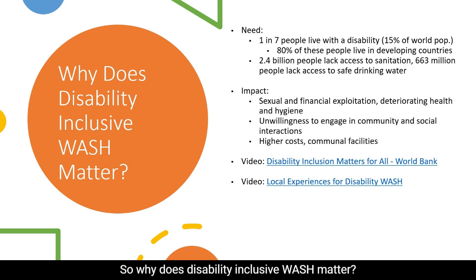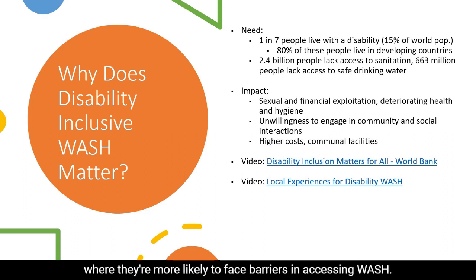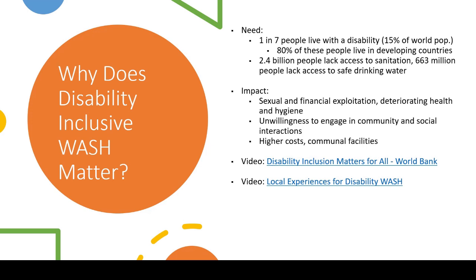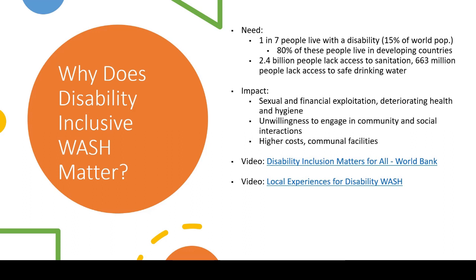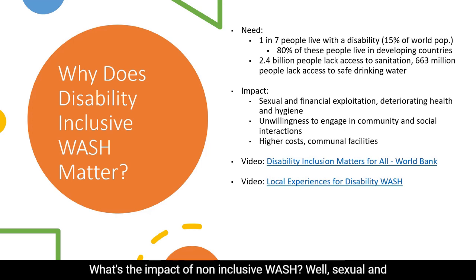So why does disability-inclusive WASH matter? One in seven people live with a disability — that's 15% of the world population, or about a billion people. And 80% of these individuals with disabilities live in developing countries where they're more likely to face barriers in accessing WASH. 2.4 billion people lack access to sanitation, and 663 million lack access to safe drinking water, and of these many are individuals with disabilities.